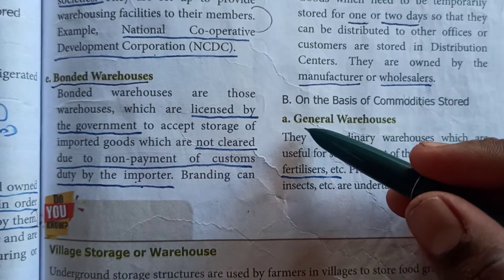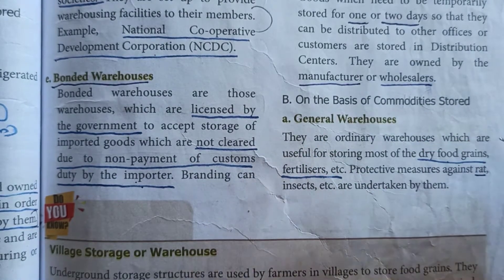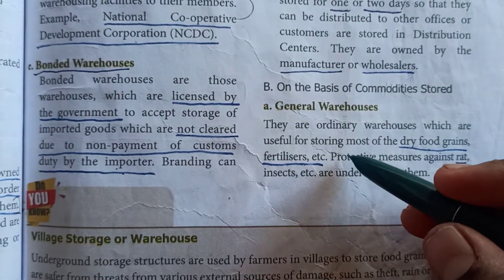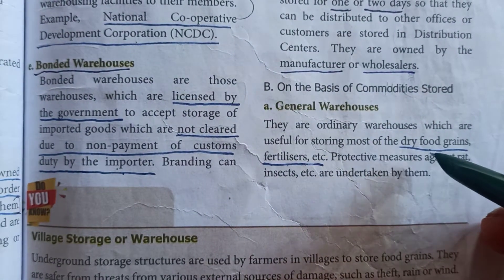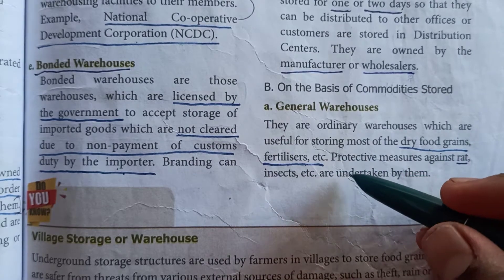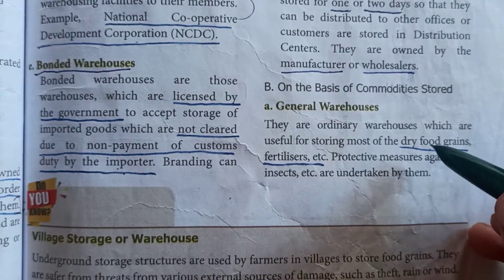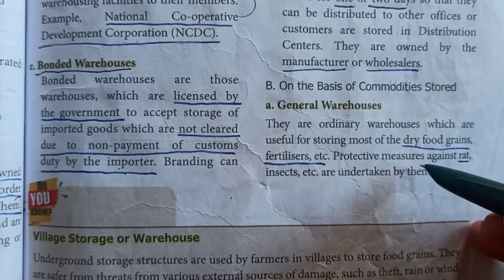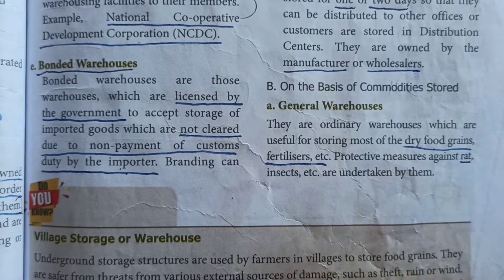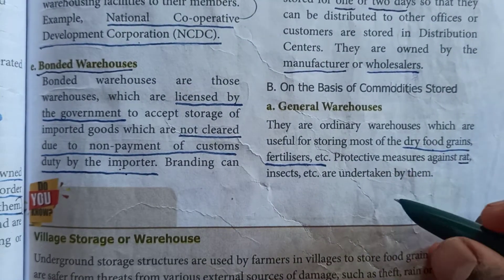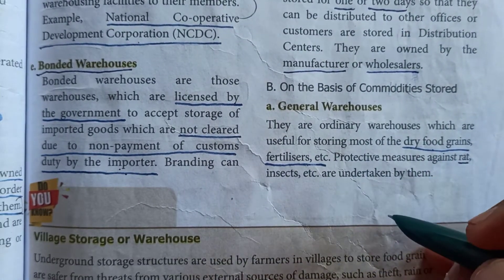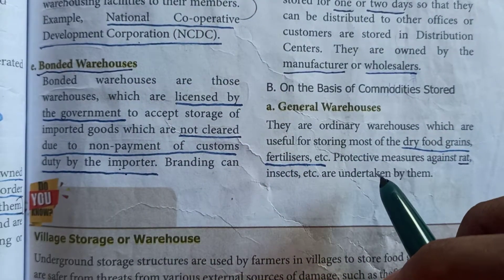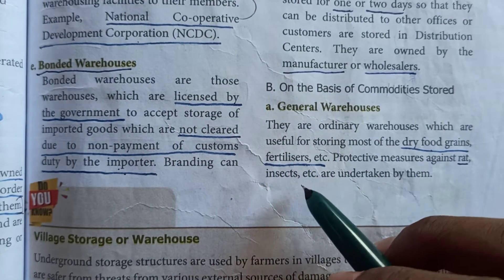Warehousing types. First is general warehouses. They are ordinary warehouses which are useful for storing most dry food grains, fertilizers, etc. This is a normal warehouse where dry food grains and fertilizers are stored.